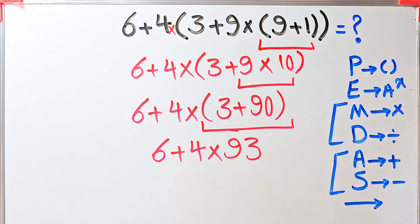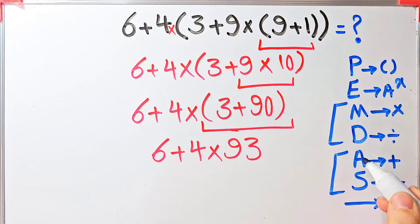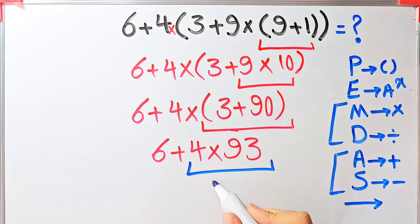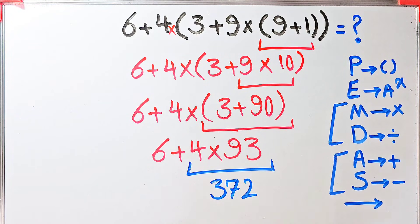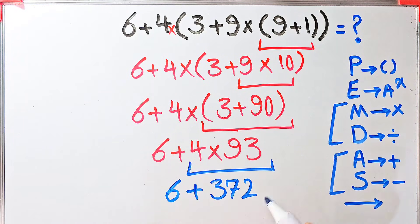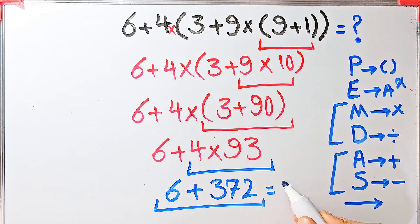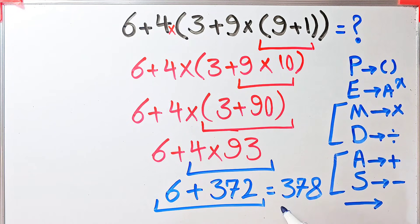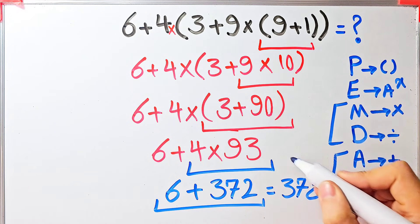In this step we have addition and multiplication. First we simplify this multiplication because multiplication has higher priority than addition. 4 times 93 equals 372. Now we have 6 plus 372. 6 plus 372 equals 378, and the final answer of this question equals 378.